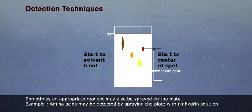3. Sometimes, an appropriate reagent may also be sprayed on the plate. Example: amino acids may be detected by spraying the plate with ninhydrin solution.